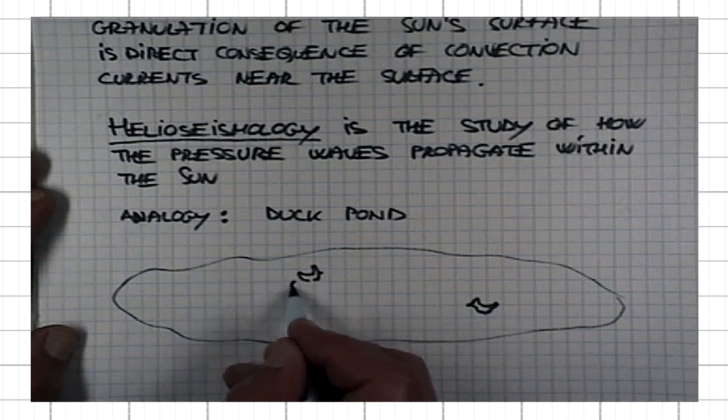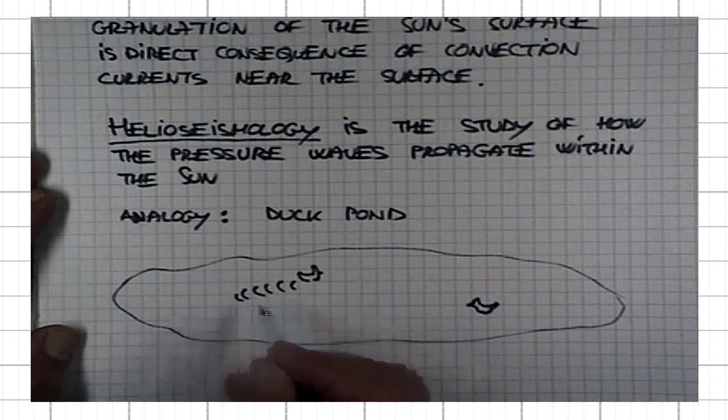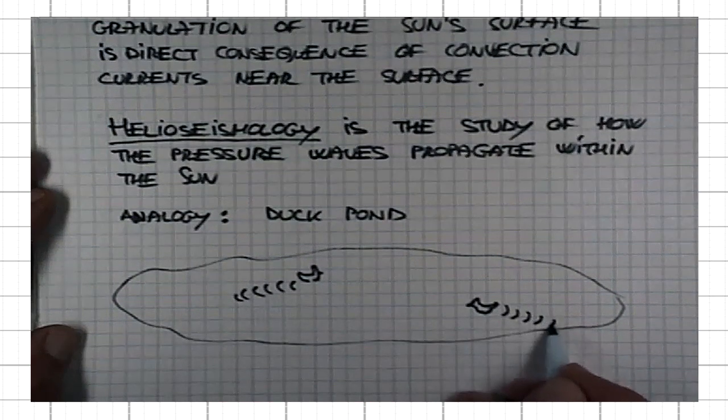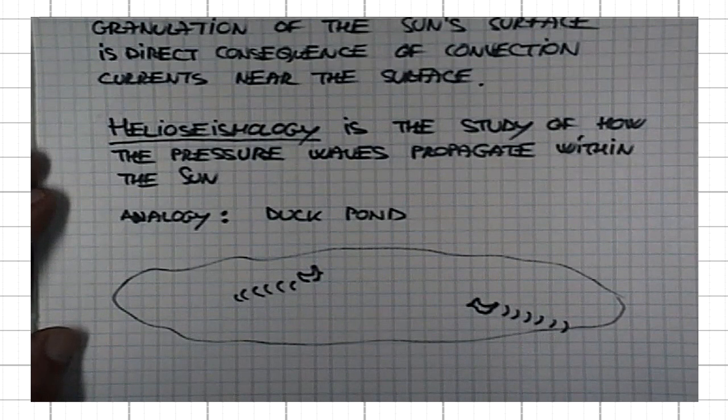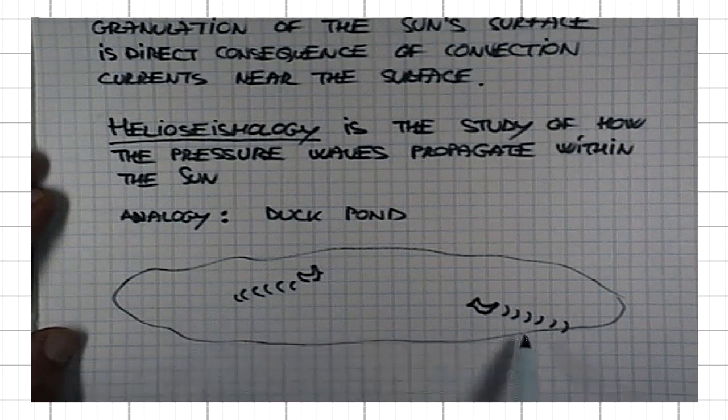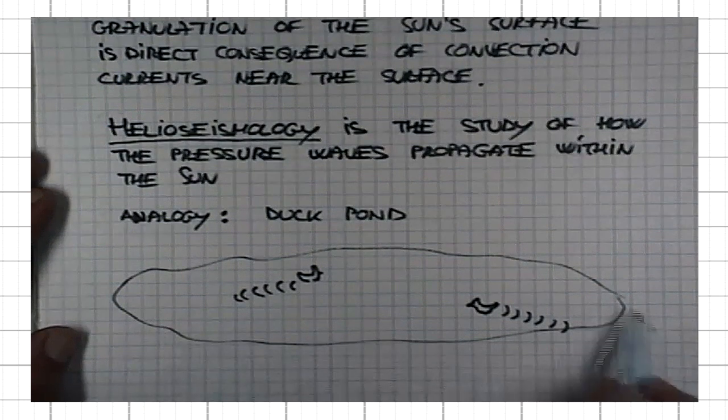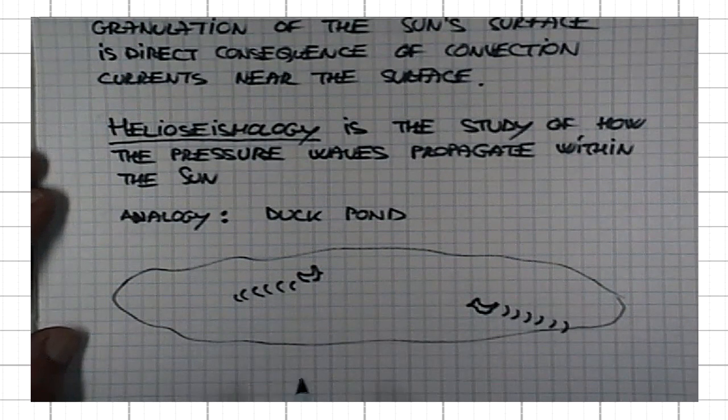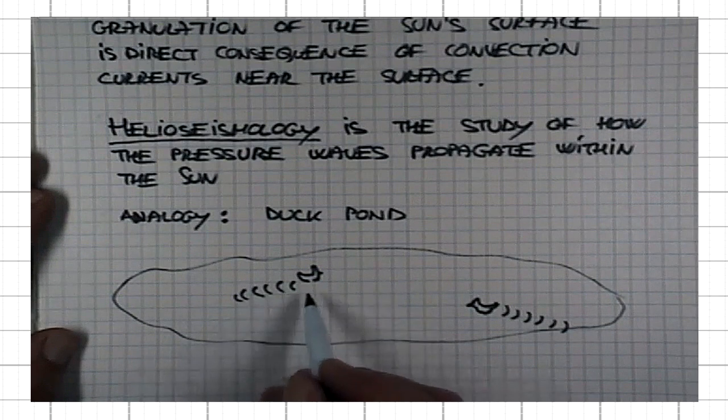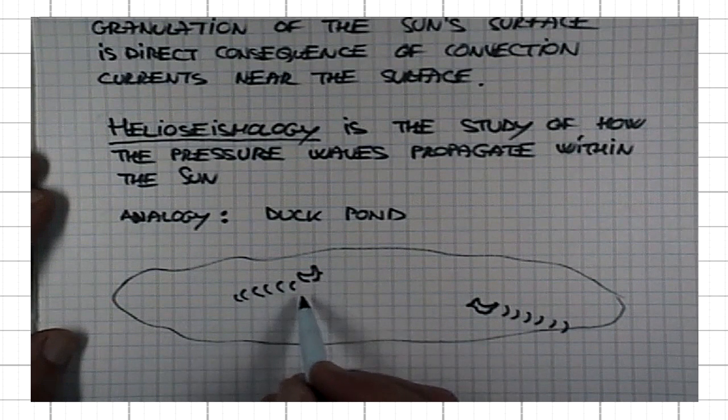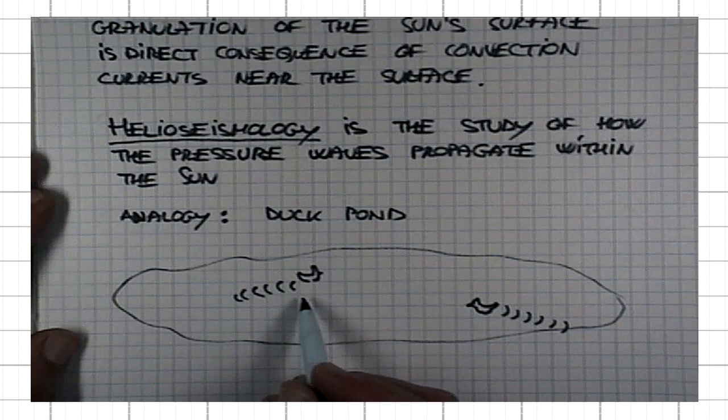As they move, they produce in their wake little wavelets that arrive at the shore. By analyzing these wavelets once they arrive at the shore, the surface of the sun, in principle one can tell exactly in which direction and with what speed the ducks are moving.